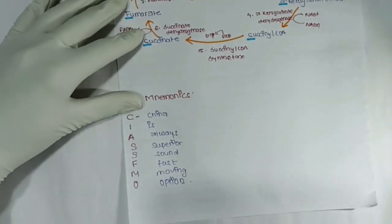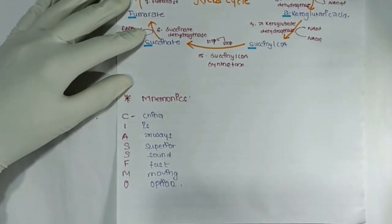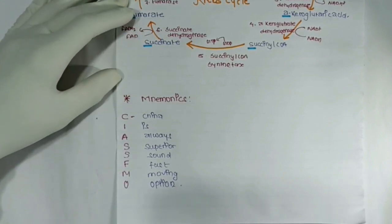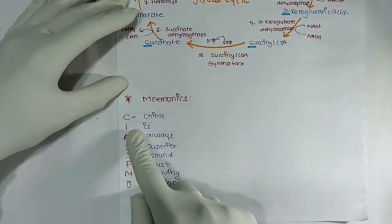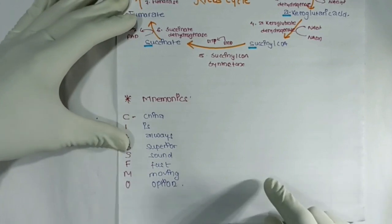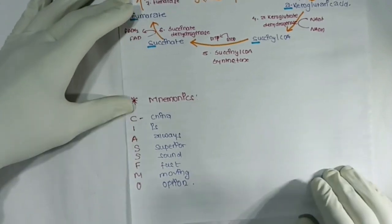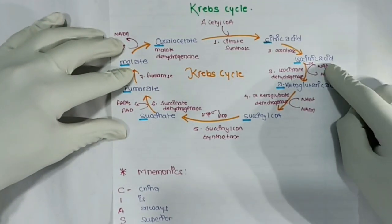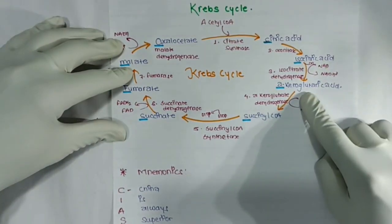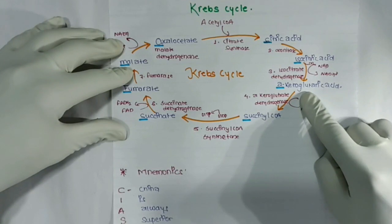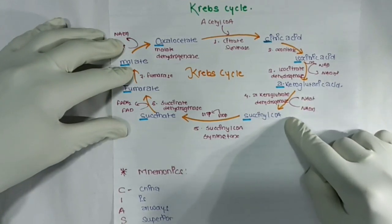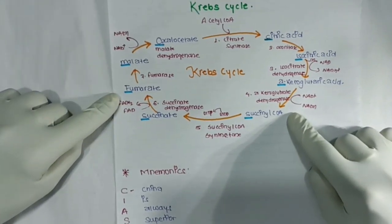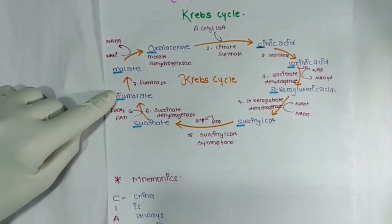Here we can see mnemonics to learn the Krebs cycle. The mnemonic is: 'China Is Always Superior Sound Fast Moving Option.' Each letter represents an intermediate: C = Citrate, I = Isocitrate, A = Alpha-ketoglutaric acid, S = Succinyl-CoA, S = Succinate, F = Fumarate, M = Malate, and O = Oxaloacetate.